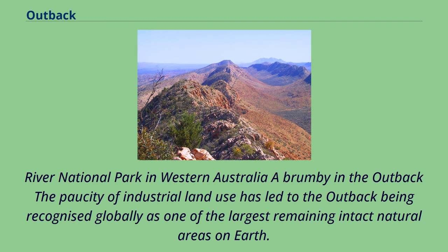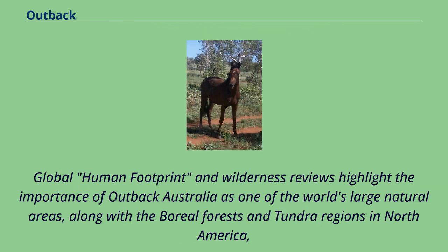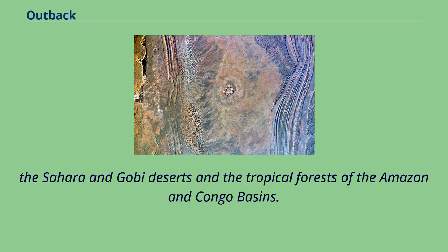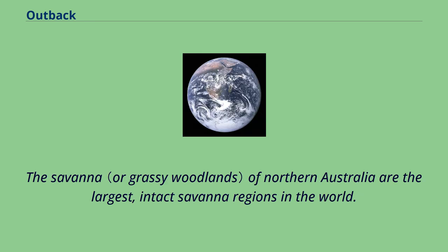The paucity of industrial land use has led to the outback being recognised globally as one of the largest remaining intact natural areas on Earth. Global human footprint and wilderness reviews highlight the importance of outback Australia as one of the world's large natural areas, along with the boreal forests and tundra regions in North America, the Sahara and Gobi deserts, and the tropical forests of the Amazon and Congo basins. The savannahs of northern Australia are the largest intact savannah regions in the world.